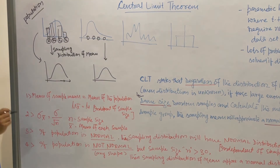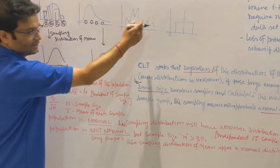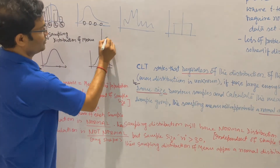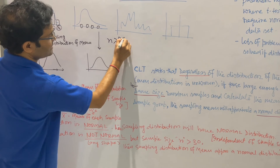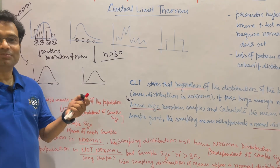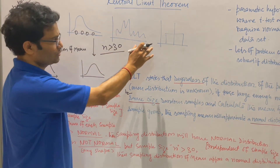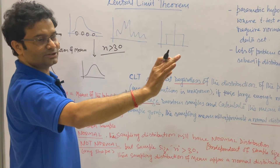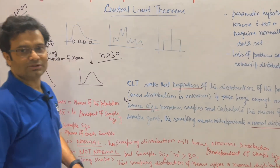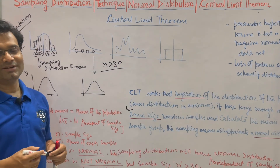The fourth and most important point: if your population is not normal — any shape — but the sample size n is equal to or greater than 30, this 30 is called the magic number. It has been proven that if your sample size is more than 30 and you calculate the sampling distribution of the mean from any unknown shape of population data, you will end up with a normal distribution. These 4 statements from the central limit theorem allow you to convert any distribution into a normal distribution.